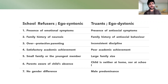School refusal also presents with emotional symptoms, and these children have family histories of neurosis and in some cases overprotective parenting. These children have satisfactory academic achievement, are usually from small families or are the youngest in the family, and parents are aware of the absence from school. There is no gender difference. In truancy, there are associated antisocial symptoms, a positive family history of antisocial behavior, inconsistent parenting discipline, poor academic achievement, and larger family size. These children are neither at school nor at home, and truancy is more common in males.